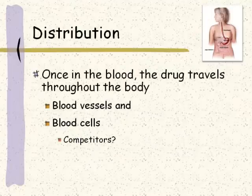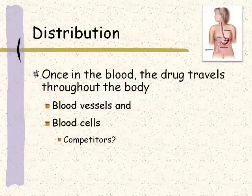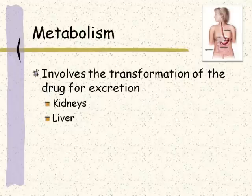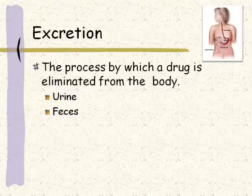Distribution: once the drug is in the blood, it travels throughout the body through blood vessels mostly, and blood cells. Some things in the blood will make a difference in how the drug is distributed — for example, does this particular drug have to bind to protein? There may be other things in the blood competing for that protein so the drug can't combine. Metabolism involves the breakdown of the drug — transformation, getting it ready to be excreted from the body — done mainly through the kidneys and the liver. Excretion has to do with the urine and the feces.